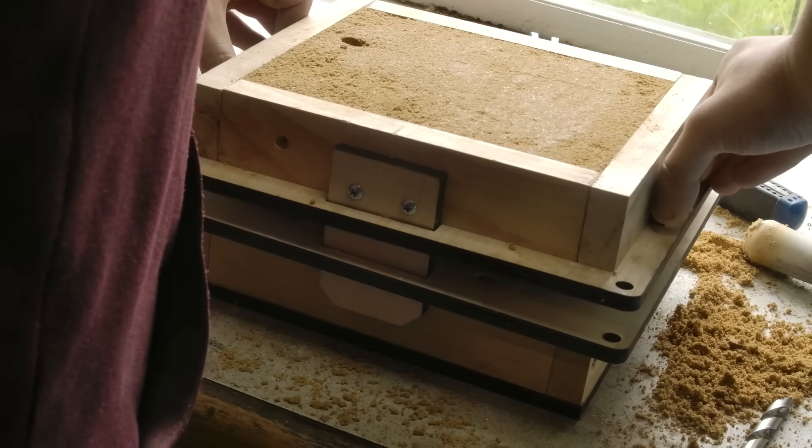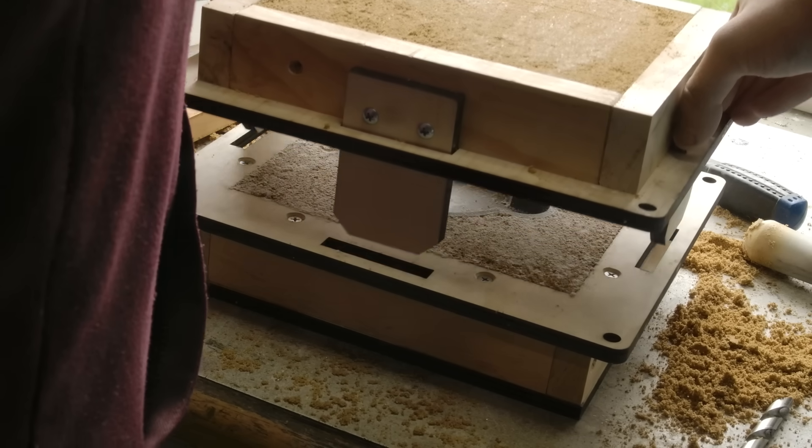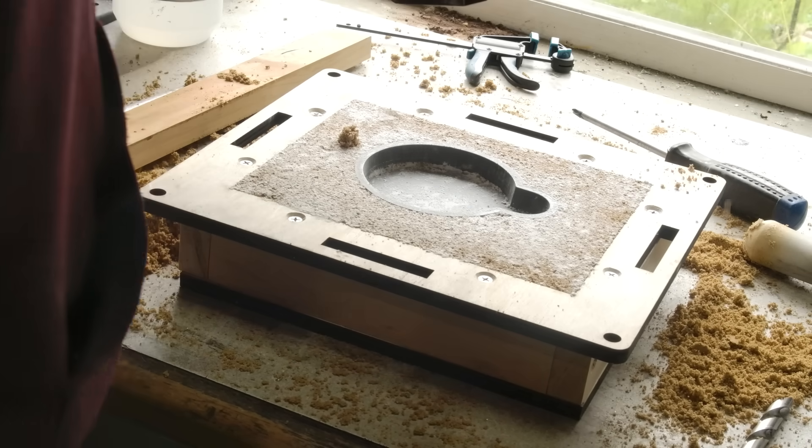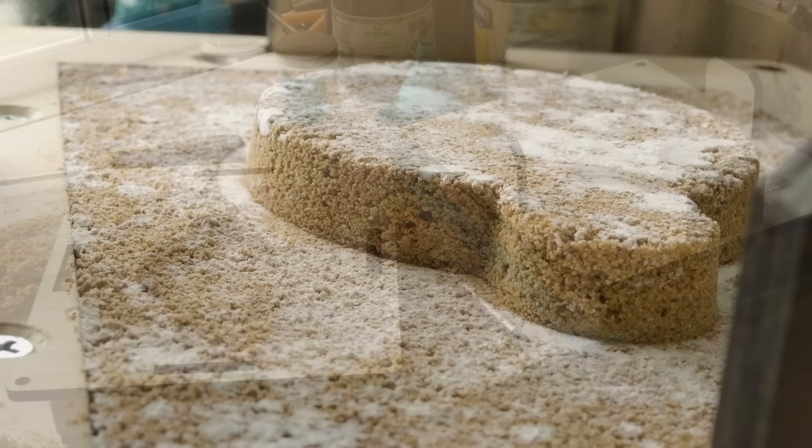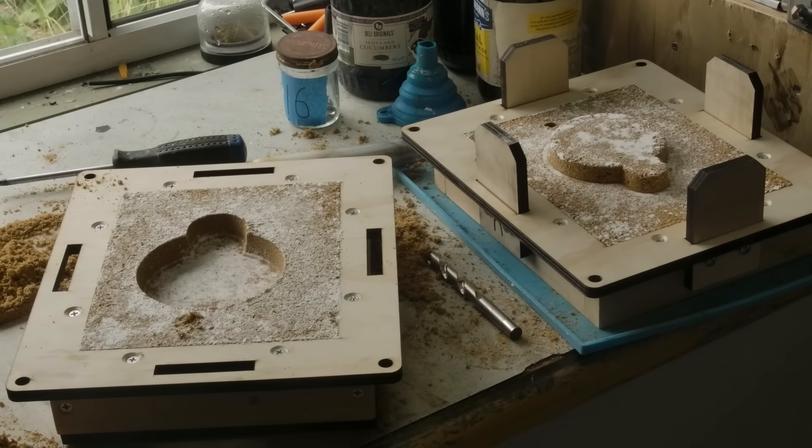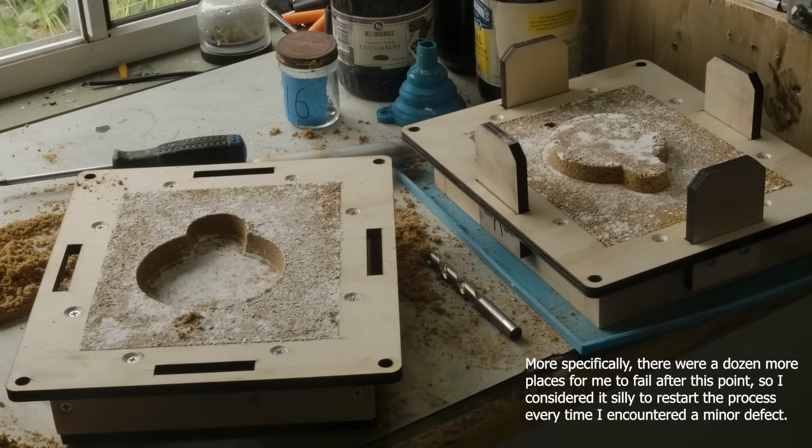Now, we separate the two halves again, and can get a look at our mould cavity. After removing the pattern, I can immediately see that I haven't rammed the sand hard enough, as there are clear voids in the cavity. However, I'm lazy, so I opt to push forward, figuring that I would have to file down the sides anyways.